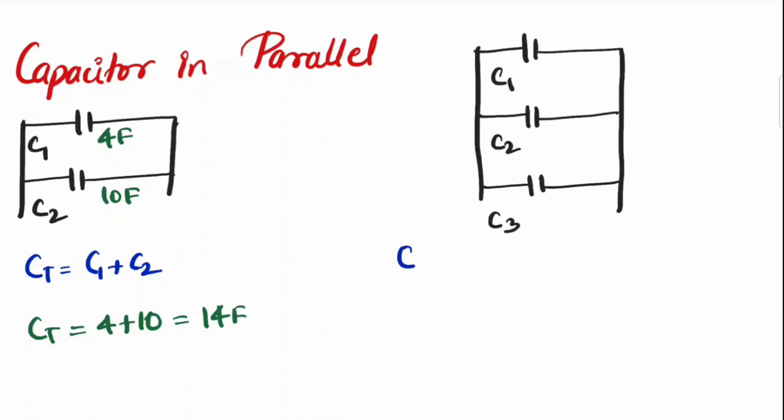And similarly, for 3 parallel capacitance, C1 plus C2 plus C3. So if I want to take an assumption 10 Farad, 15 Farad and 30 Farad, the total capacitance will be 10 plus 15 plus 30, 55 Farad.